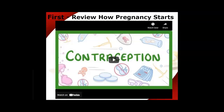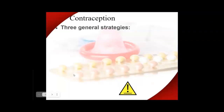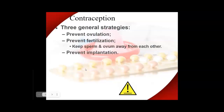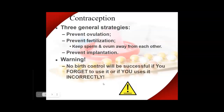That video made the key point that contraception has to prevent one of those steps: either prevent the release of the egg from the ovaries, prevent fertilization in the fallopian tubes, or prevent implantation in the uterus. FSH — follicle-stimulating hormone — causes development of the egg; LH triggers ovulation; estrogen and progesterone affect the uterine lining. No birth control will be successful if you forget to use it or use it incorrectly.